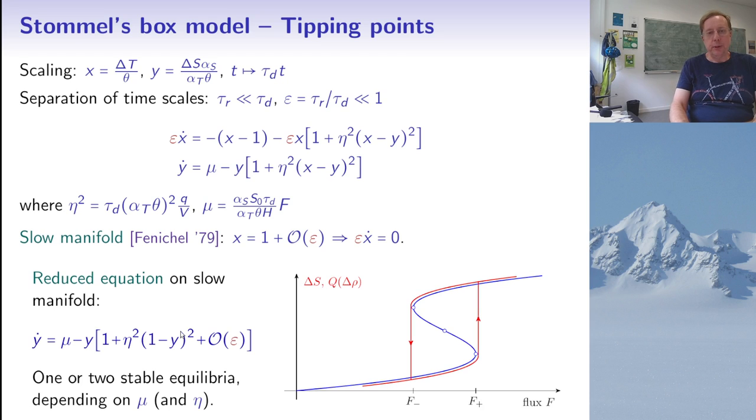So if we do that, we end up with an even simpler ODE, which is now one dimensional for y, which is proportional to the difference in salt, but also related to the mass exchange. And it's this equation here. And now in particular, we can look at equilibrium states. So equilibrium state means that this quantity here, y times this bracket should be equal to mu. And mu is this parameter, which is proportional to the freshwater flux. And y times the bracket, that's a cubic function, which looks like this here.